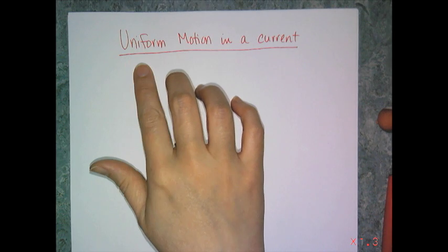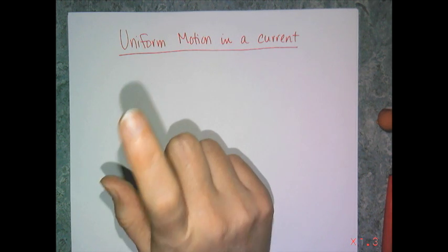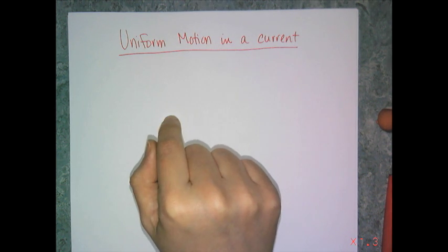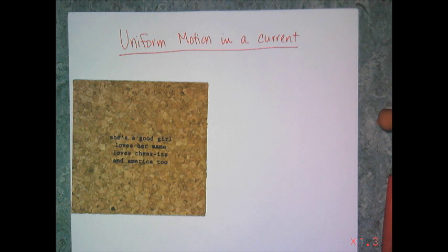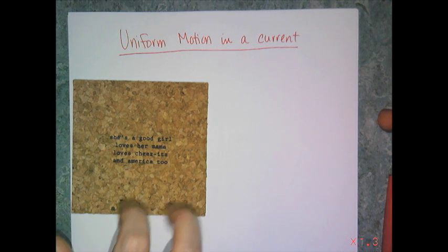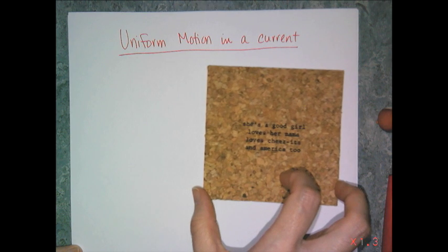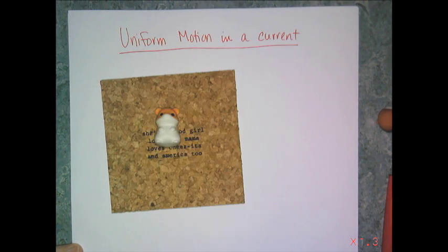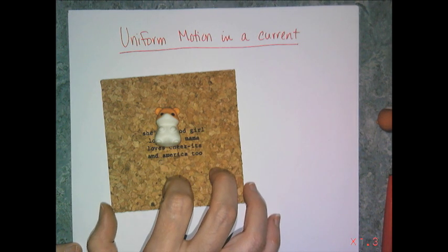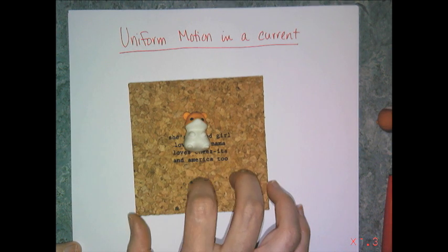I know this uniform motion in a current sounds like the craziest thing ever, but it's actually not that difficult of a concept to understand. It's actually the concept behind the treadmill. So, what I'm going to do is, we're going to look at the example of a river, and this coaster is going to represent the flow of the water. So, let's say that a river goes five kilometers an hour in this direction, right? So, this hamster is going to be a person, and let's say that you're floating on an inner tube on the river.